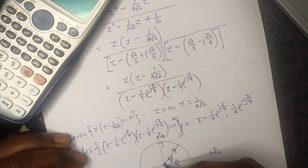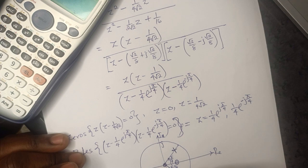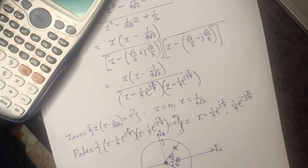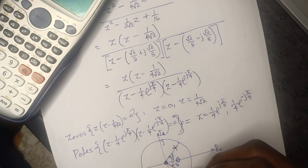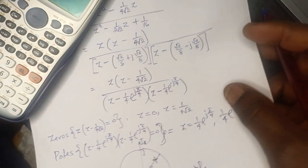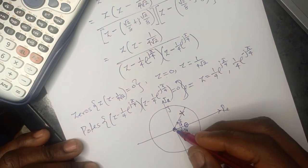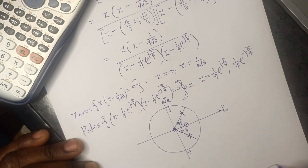The other pole is at angle −π/4, also inside the unit circle. The poles have a larger magnitude value than the zeros, so the poles dominate the scene. Because of this, the zero at the origin has very little influence on H(ω).